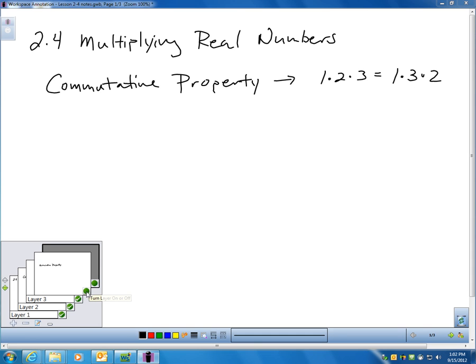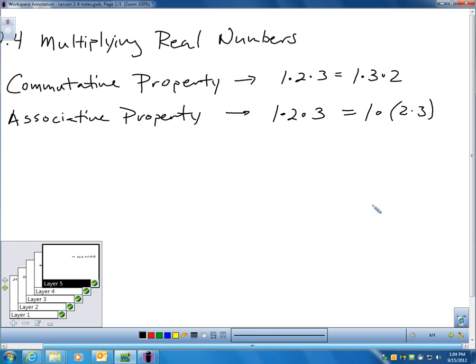There is a second property of multiplication somewhat related to the commutative property but it's not exactly the same thing. It's the associative property. The associative property is a property that allows me to multiply in a different order and still get the same answer. You might be thinking, wait a minute, isn't that what you did here? Well, what I did here is I physically rearranged the order of the numbers. The associative property simply says I can multiply in a different order if I want to and still get the same answer. So, you notice I didn't physically rearrange anything but I did multiply in a different order.